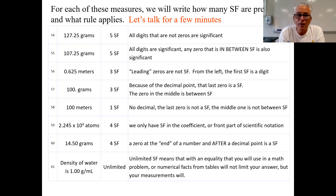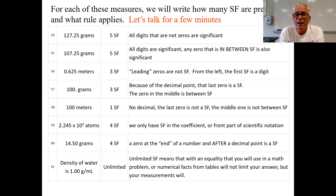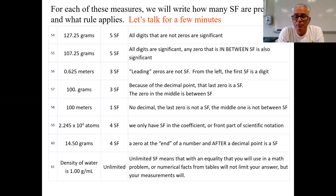Number 54: this first measurement might come off a scale in lab. You might weigh something and it might read 127.25 grams. Rule number one: if it's a digit that's not zero and you measured it on a scale, they're all significant — every single one. Those numbers are important; they're part of the measurement and are not to be overlooked or rounded away.